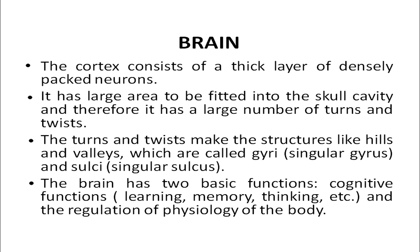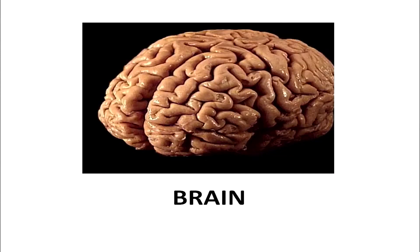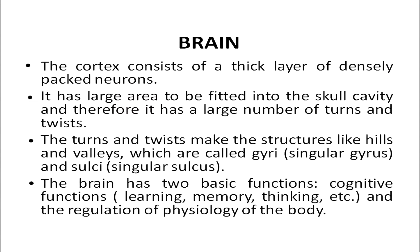The cortex consists of a thick layer of densely packed neurons. It has a large area to fit into the skull cavity, and therefore has a large number of turns and twists called gyri (singular: gyrus) and sulci (singular: sulcus), which make structures like hills and valleys. The brain has two basic functions: cognitive functions related to learning, memory, and thought processes, and the regulation of the physiology of the body.